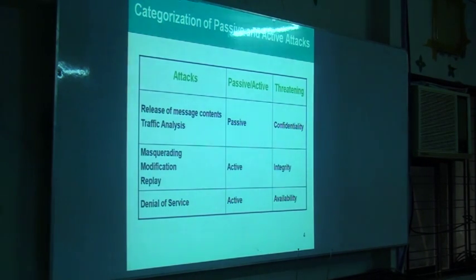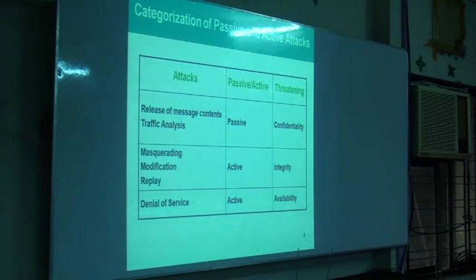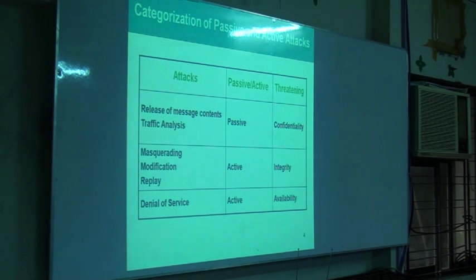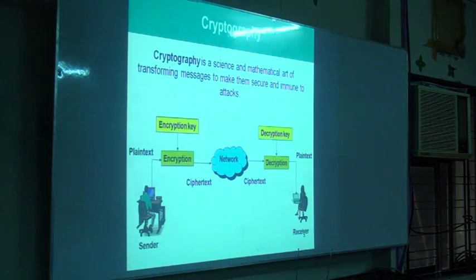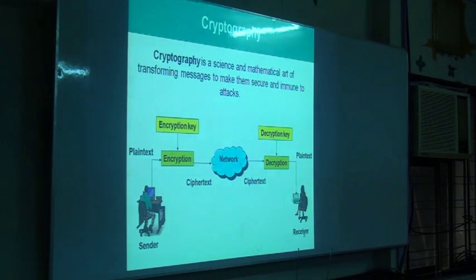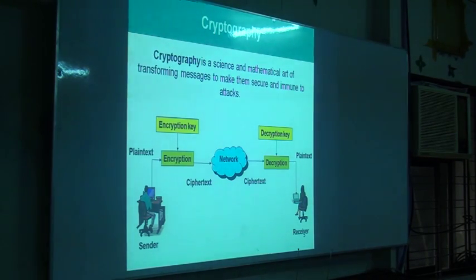A passive attack is where an intruder just monitors the network system and the types of data transmitting over the internet, but does not greatly hamper the data. Release of message content and traffic analysis performed by cryptanalysts are types of passive attacks. The solution is cryptography — a science and mathematical art of transforming messages to make them secure and immune to those attacks.